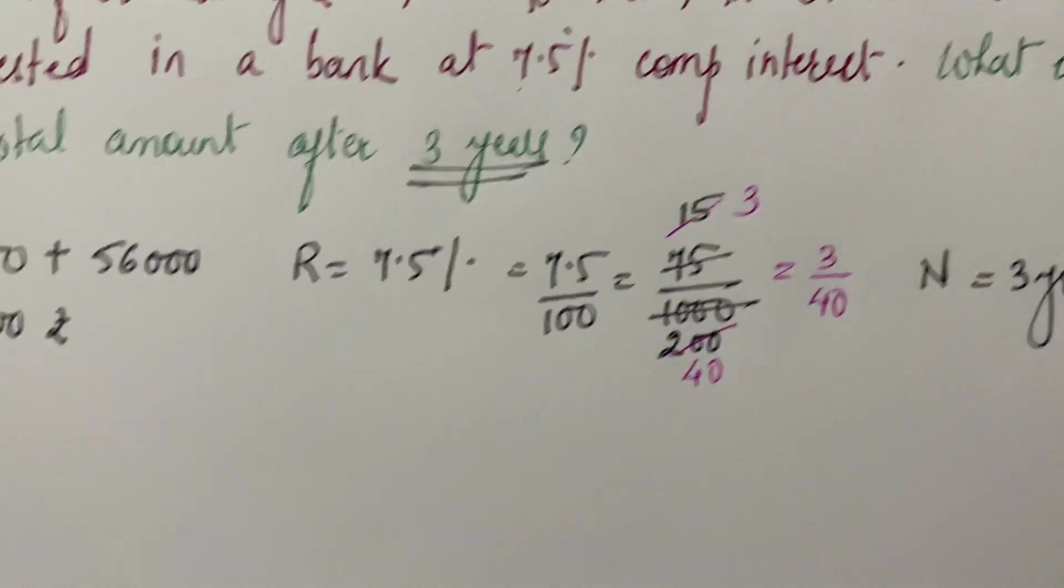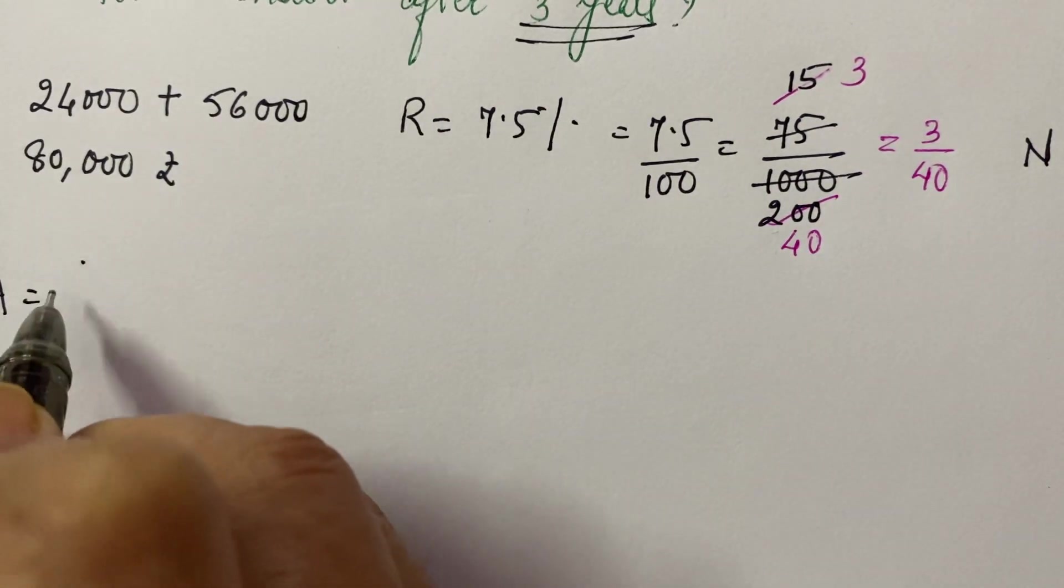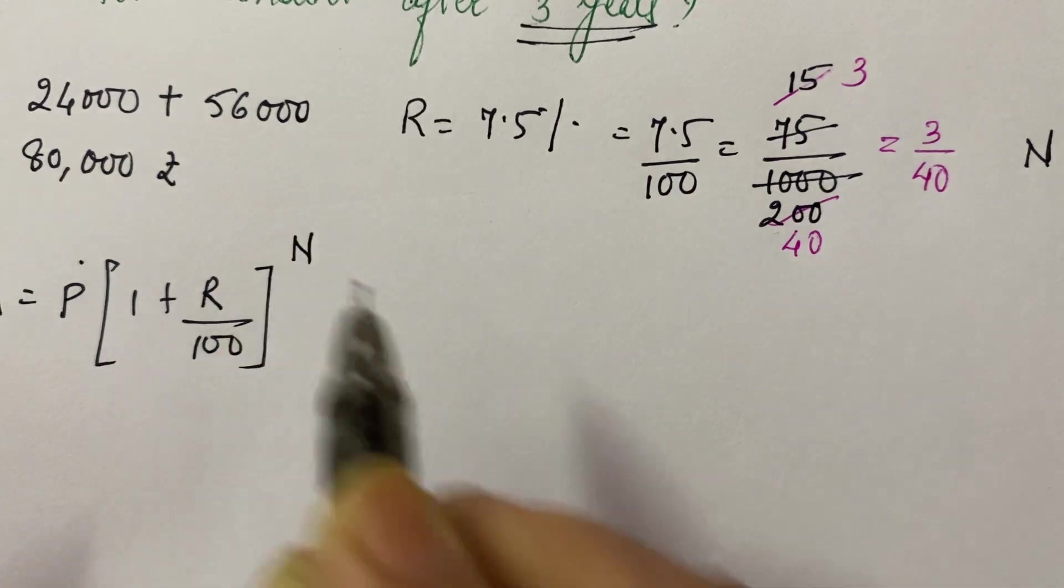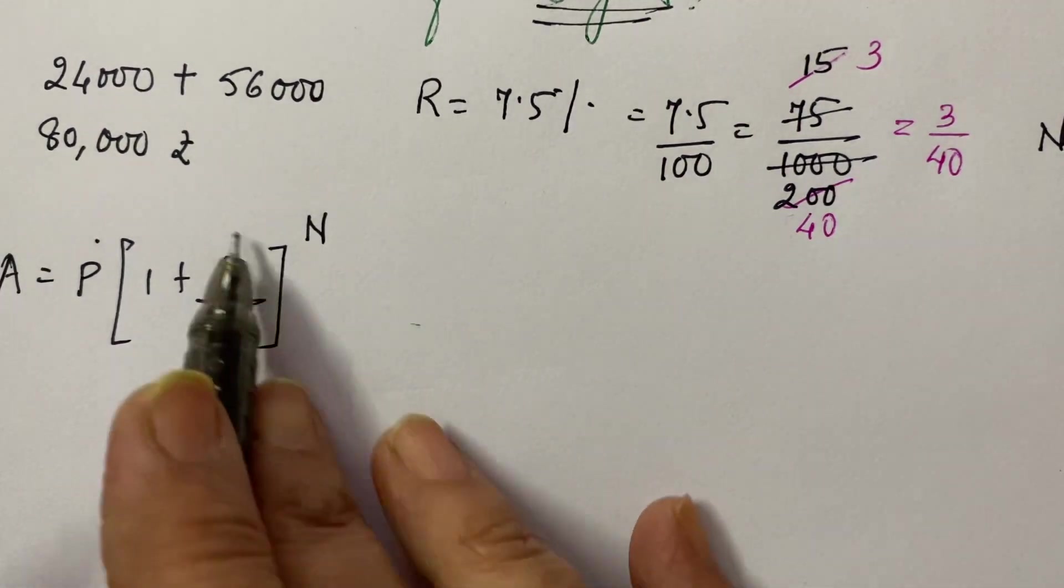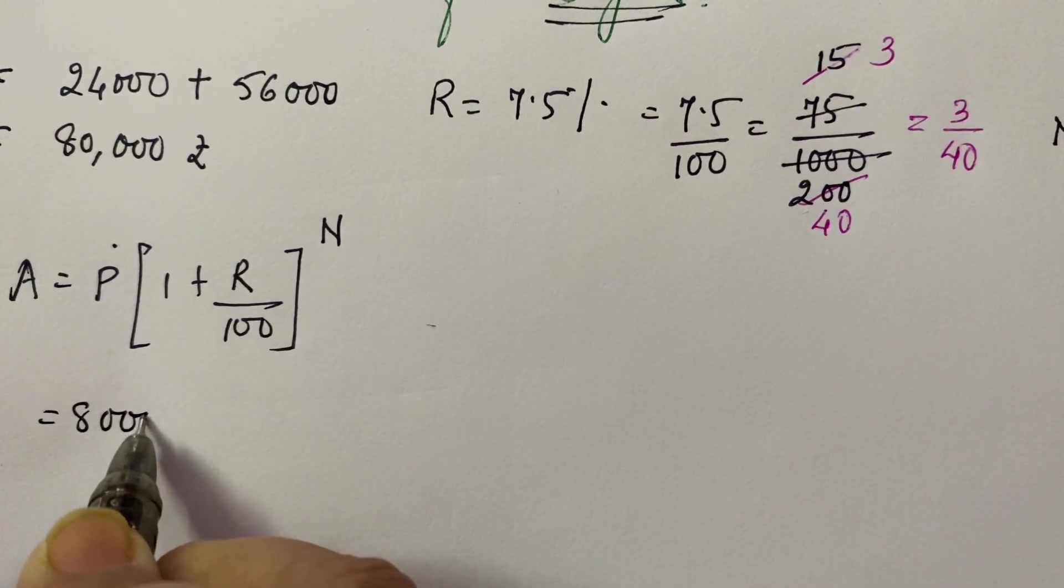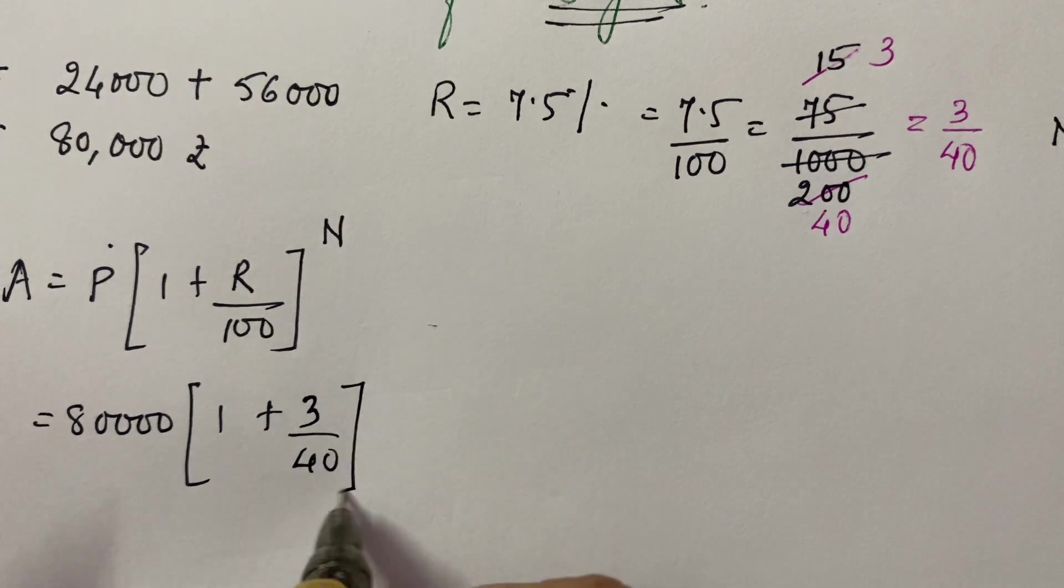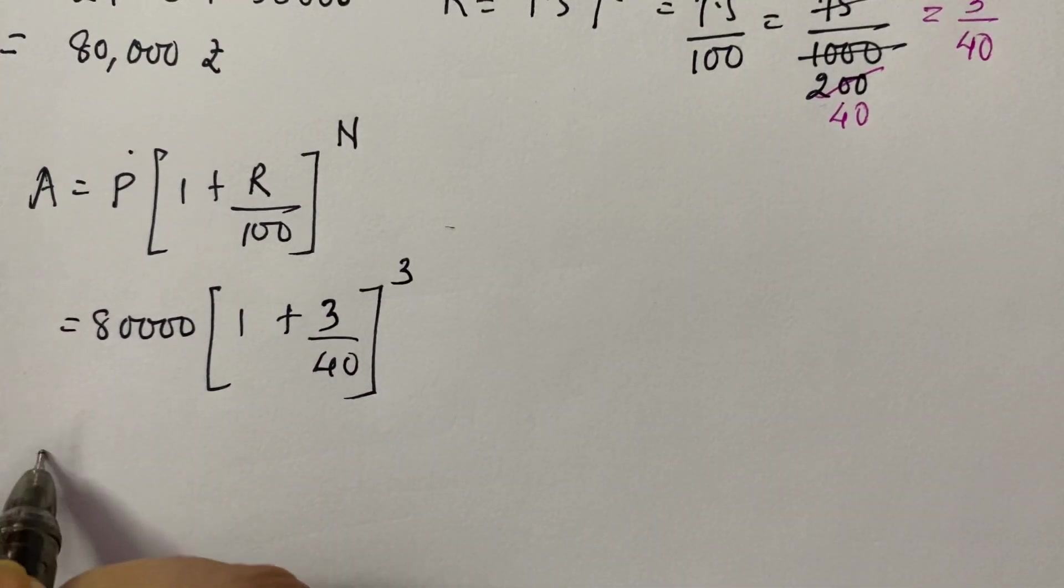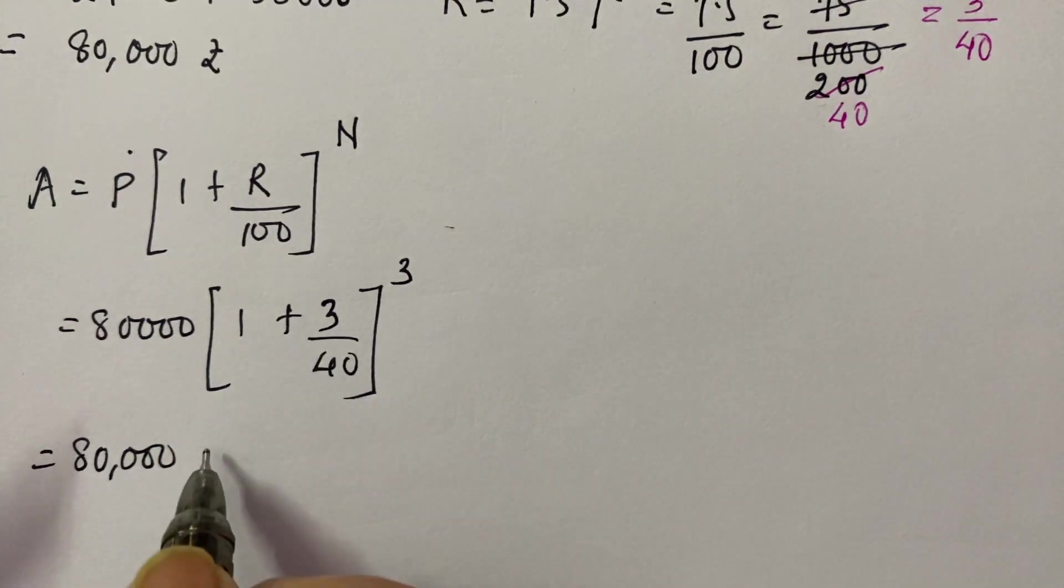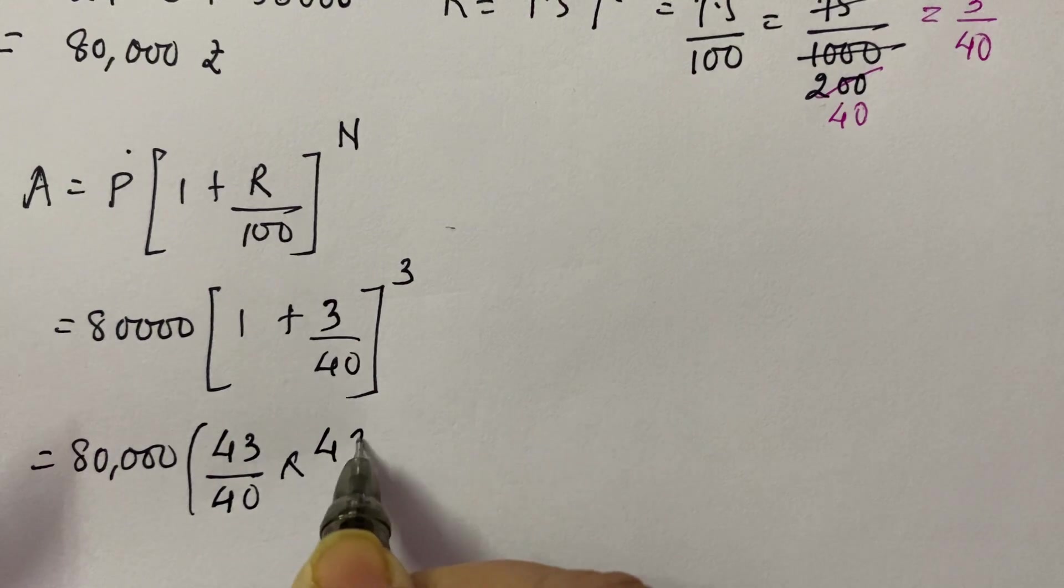So, the formula for compound interest—first of all, we have to find out the amount only. Amount is equal to P into 1 plus R upon 100 raised to the power N. Now your R upon 100, which is 3 upon 40, I have shown you here. Okay? So, this will be 80,000 into 1 plus 3 upon 40 raised to the power 3. How many times? 3 times.